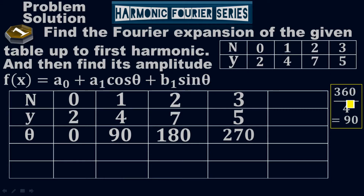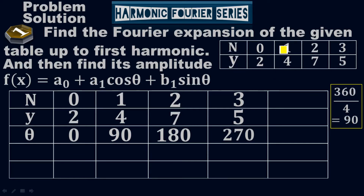We find theta by dividing the total number of degrees, 360, by the number of points N. In the given table, the points go from 0 to 3, so there are 4 points — remember to count 0. Since N = 4, we divide 360 by 4, which gives theta = 90 degrees. If N were 5, you'd divide by 5; if N were 6, you'd divide by 6.